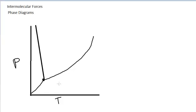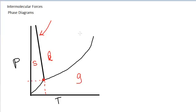For water, the phase diagram has a feature that is different than most substances, in that the solid-to-liquid phase boundary actually slopes slightly backwards. This backward-sloping line gives rise to the fact that the density of ice is slightly less than the density of liquid water, and that's backwards from most substances. Usually in the solid phase you have a more dense substance, but for water, the density of the ice cube is actually slightly less than the density of liquid water — so ice cubes float — and that is a direct result of this backward-sloping line for the solid-liquid boundary.